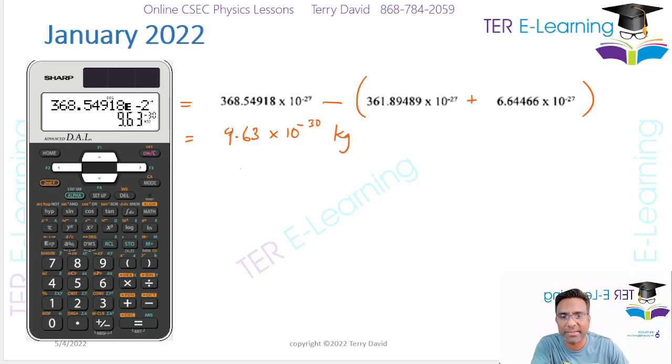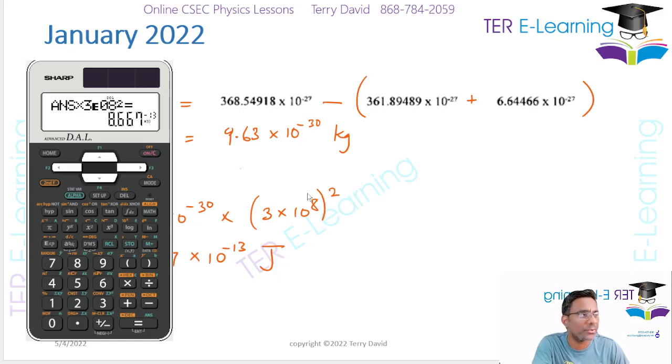If you want to get the energy released in the reaction now, it's going to be E equals mc squared. Your mass is going to be 9.63 multiplied by 10 to the minus 30 multiplied by your speed of light. They give us that in the question, that's 3 by 10 to the 8. But one of the mistakes that students make is that they forget to square the speed of light. So I'm gonna square the speed of light - I already have the mass here, multiplied by 3 EXP 8, and we're gonna square that. And I'm gonna get 8.667 by 10 to the minus 13. So that's 8.667 by 10 to the minus 13, and this here has to be in joules.